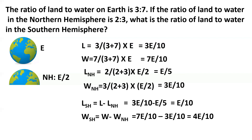Now if we take the ratio of these two, E gets cancelled out, the 10 in the denominator of each term gets cancelled out, and we are left with 1 to 4. So the ratio of land to water in the southern hemisphere is 1 to 4.